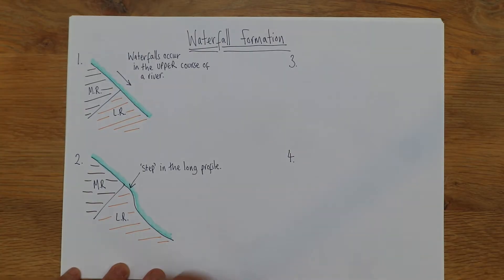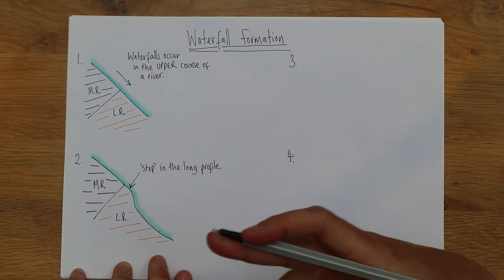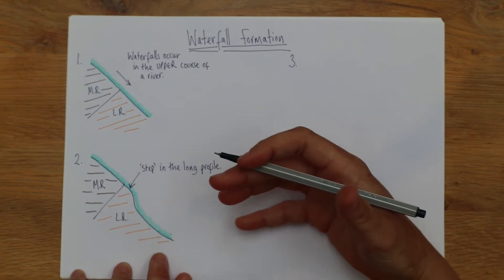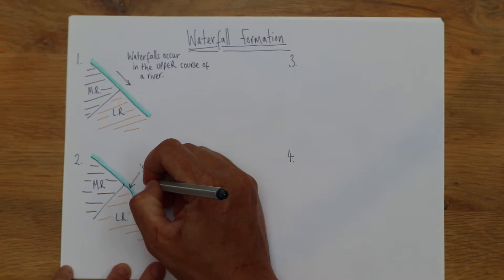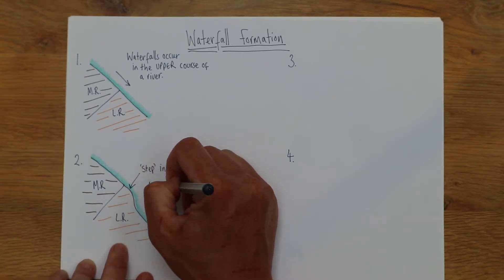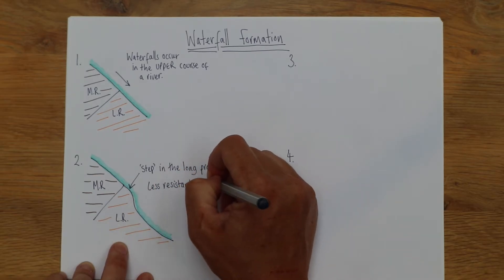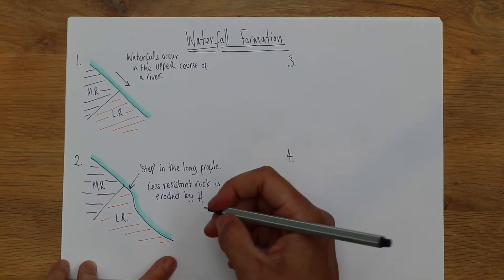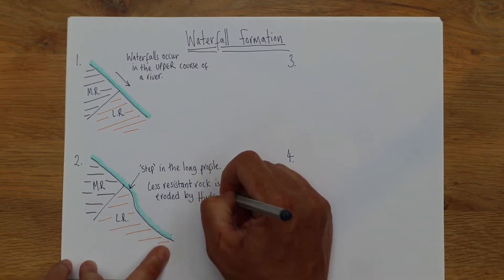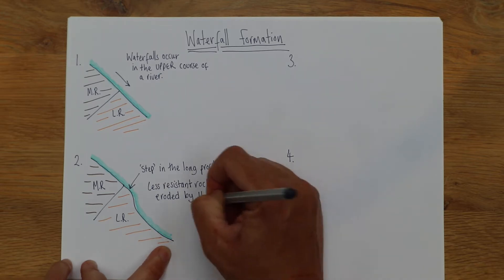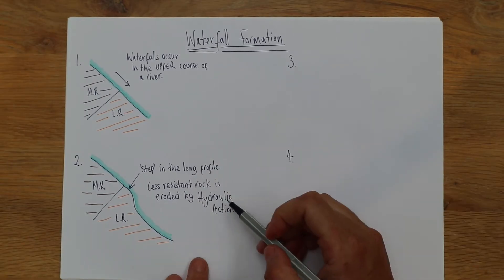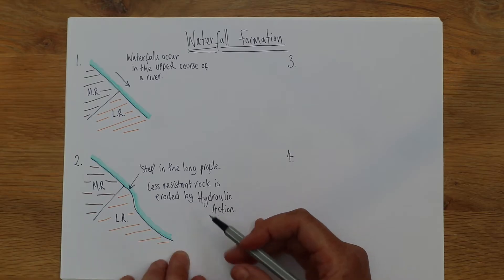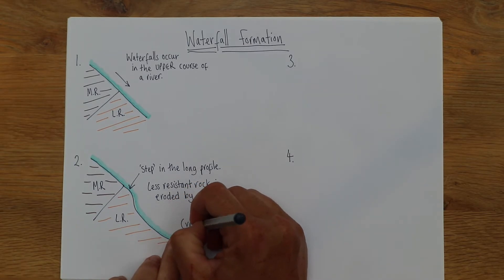That's where they start, and then what happens is this less resistant rock, which as we know is softer, gets eroded by something called hydraulic action, which is the same type of erosion as we talk about with coasts. So it's the force of the water that is breaking down the rock. Let's write that in there: less resistant rock is eroded by hydraulic action. If you're trying to achieve a slightly higher grade and want to get full marks on a question like this, then you want to actually say hydraulic action. Remember, hydraulic action is the force of the water. I'll put in brackets it's vertical erosion.